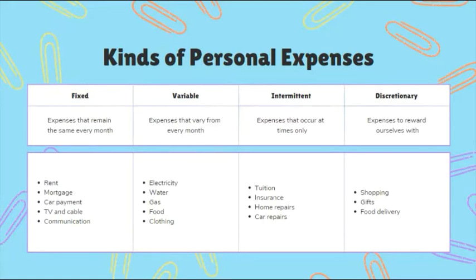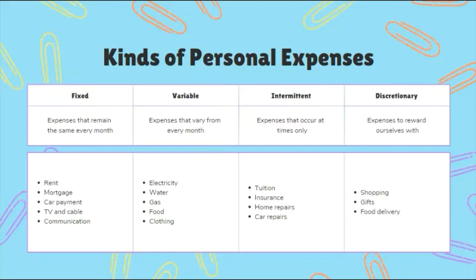Intermittent expenses are those that occur only at certain times — one-time or occasional payments with a defined end. Examples include tuition, insurance, home repairs such as securing your roof before the rainy season, and vehicle or motorcycle repairs. These are not recurring fixed costs nor variable costs.